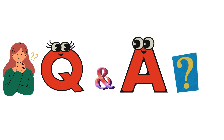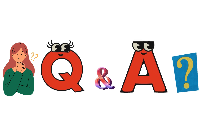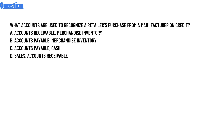Today's question is: what accounts are used to recognize a retailer's purchase from a manufacturer on credit? Option A: accounts receivable, merchandise inventory. Option B: accounts payable, merchandise inventory. Option C: accounts payable, cash. Option D: sales, accounts receivable.